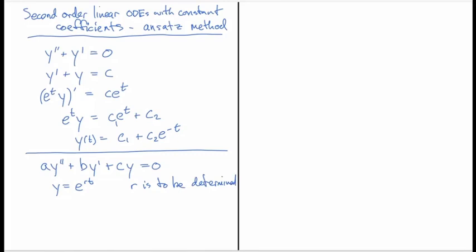So how do I do that? I plug this guess into the equation and I get a·r²·e^(rt)—that's two derivatives of e^(rt), just gives me e^(rt) with an r popping out twice by the chain rule—plus b·r·e^(rt) plus c·e^(rt) = 0. And you'll notice e^(rt) is common to all three terms, so I can divide through by it—it's never equal to zero—and I'm left with a·r² + b·r + c = 0.